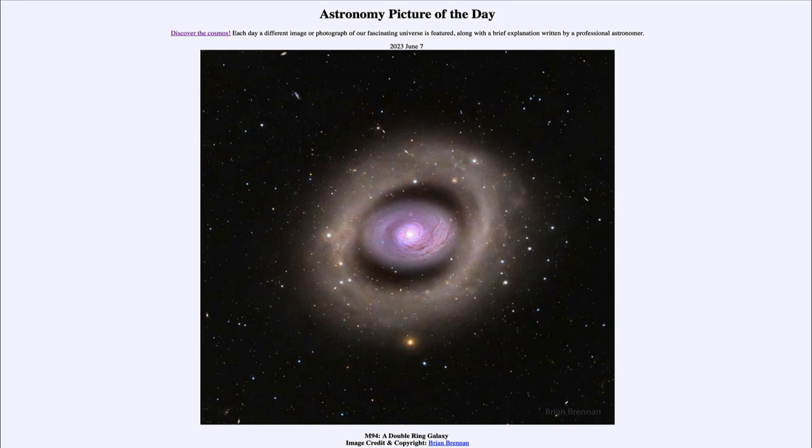Today's picture for June 7th of 2023 is titled M94, a double ring galaxy. So what do we see here? Well, this is a relatively unusual type of galaxy known as a ring galaxy.